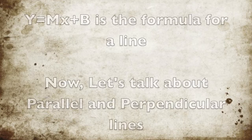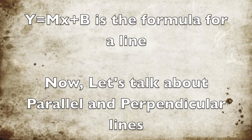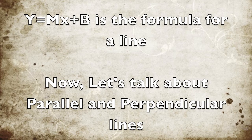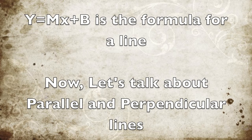Now, who knows what the equation y equals mx plus b equals? Oh, Ezra. It has to do with lines. That's good, Ezra! Ezra was right. y equals mx plus b is the formula for a line. The y represents the y-axis on a graph, the m is the slope of the line, the x is the x-axis, and the b is the y-intercept, where the line will intersect with the y-axis.